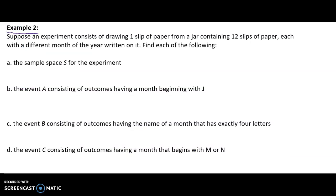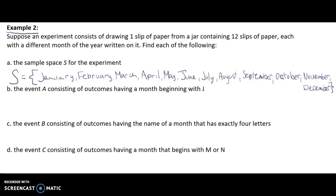Let's practice more vocabulary with example two. Suppose an experiment consists of drawing a slip of paper from a jar containing 12 slips, each with a different month of the year written on them. We want to find the sample space S for this experiment. The sample space S would simply be all of the months of the year: January, February, March, April, May, June, July, August, September, October, November, and December.